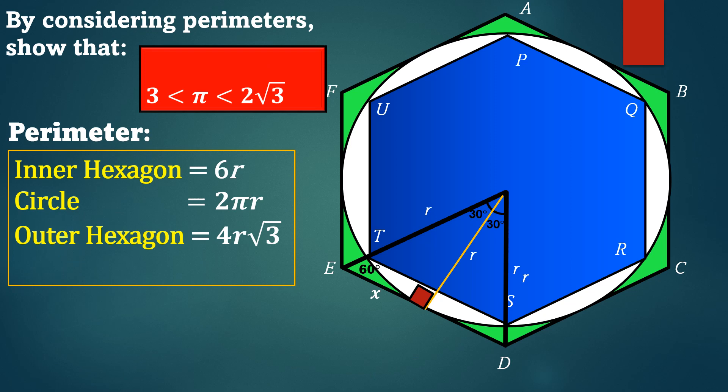Now we have the perimeters for the inner hexagon, the circle, the outer hexagon. It's easier to see that the length of the circumference of the circle will be somewhere between the length of the two regular hexagons. If we now consider the perimeter of the circle, the 2πr,